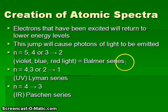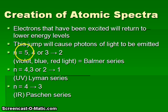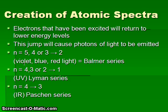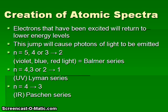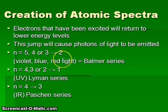In the Balmer series, we have electrons jumping from the fifth, fourth, or third energy levels down to the second level. The colors of light given off are violet, blue, and red. The five-to-two jump is the highest energy, giving off violet light. The four-to-two jump gives off blue light. The three-to-two jump is the smallest in this series and gives off red light.